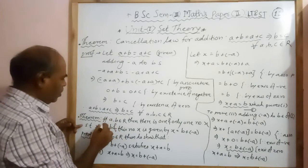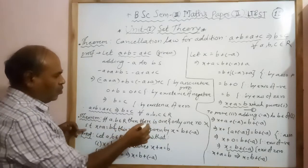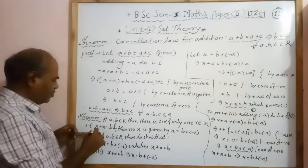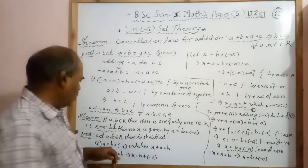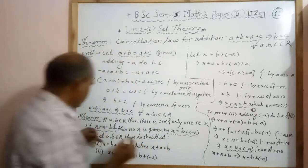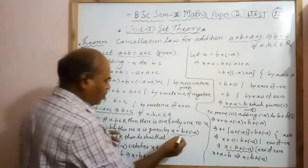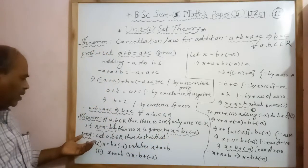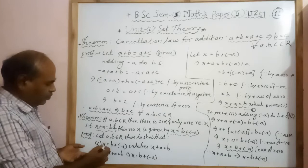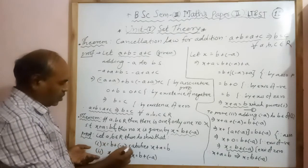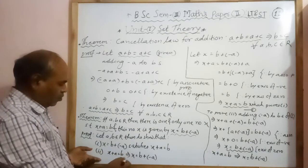Next statement: if A, B, C belong to R, then there is one and only one number X such that X plus A equals B, and this number X is given by X equal to B plus minus A. To prove the theorem, we have to show two things: first, that X equal to B plus minus A satisfies X plus A equal to B; and second, that X plus A equal to B implies X equal to B plus minus A.